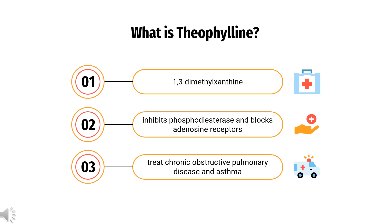Theophylline, also known as 1,3-dimethylxanthine, is a drug that inhibits phosphodiesterase and blocks adenosine receptors. It is used to treat chronic obstructive pulmonary disease and asthma. Its pharmacology is similar to other methylxanthine drugs.